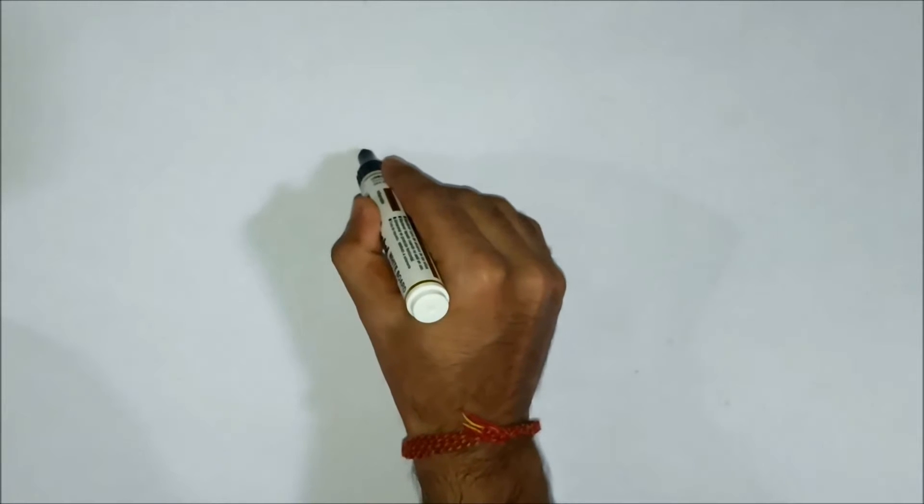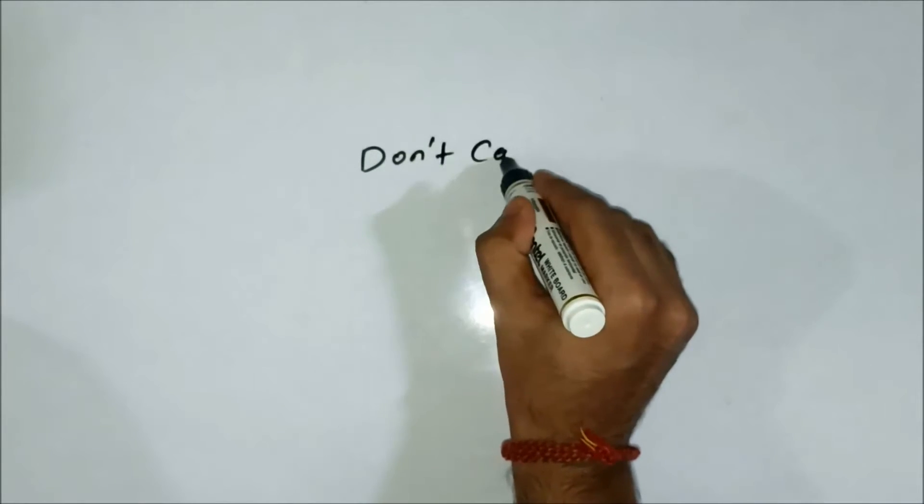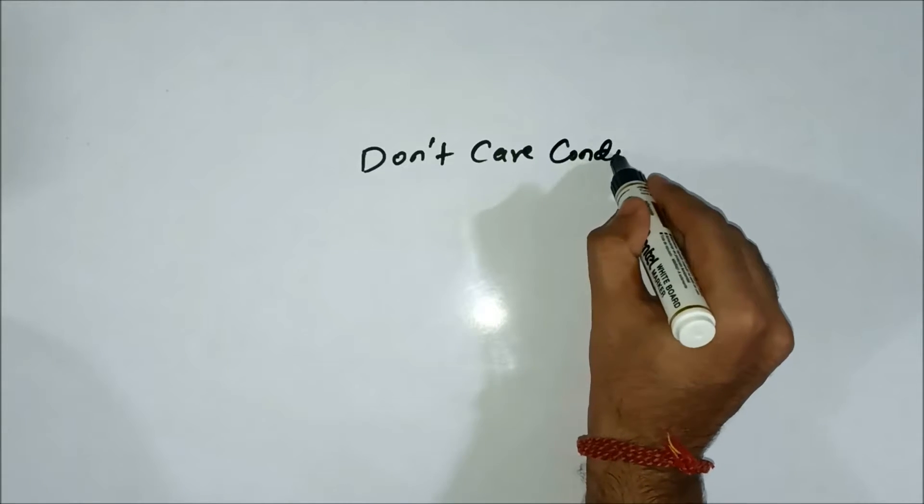Hello friends, welcome to engineering tutorial. Today we are going to resume our discussion on digital electronics. In the previous videos we discussed Karnaugh maps — the different types: SOP, POS, 3-variable, 4-variable. Today we are going to discuss another important concept related to Karnaugh maps: simplification of Boolean expressions using Karnaugh maps, which is the don't care condition.